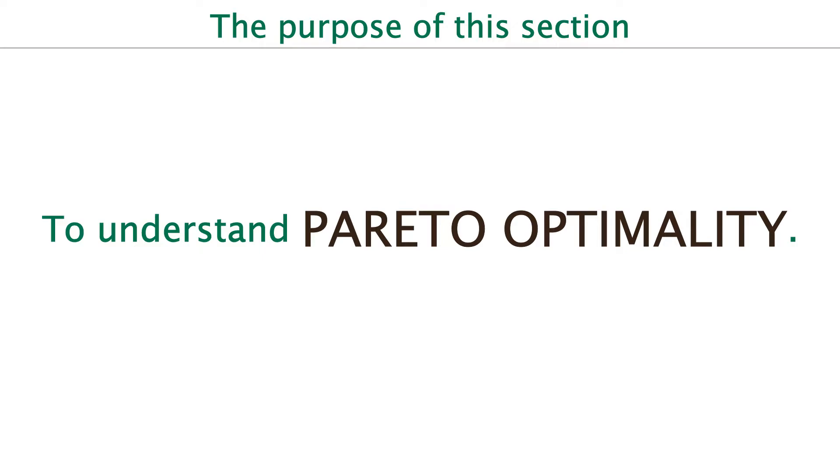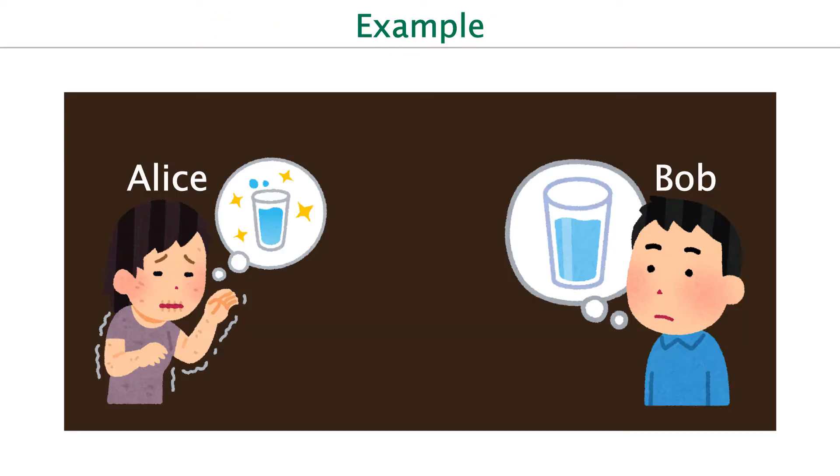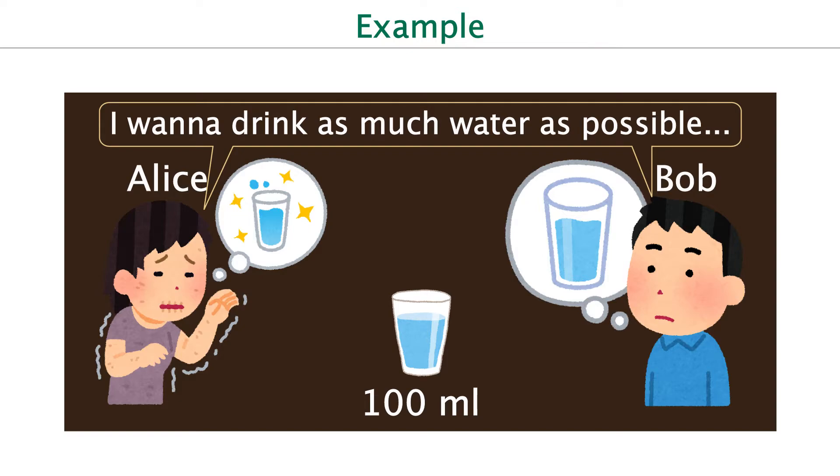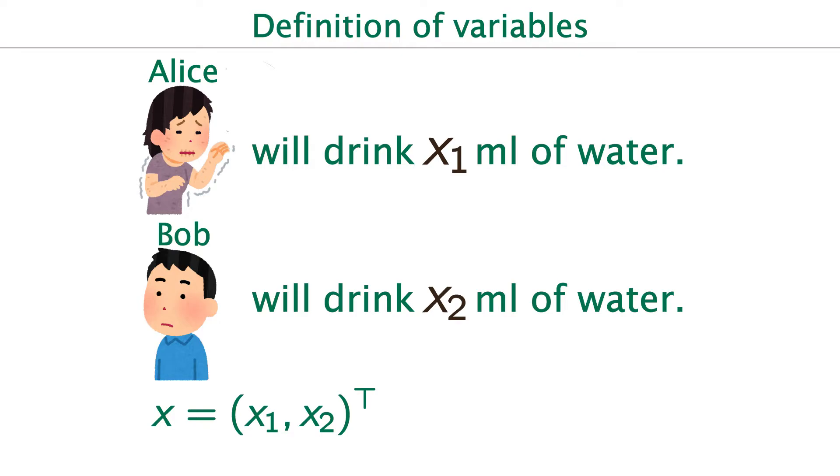Assume Alice and Bob in a closed room. They haven't been drinking water since yesterday, and they are very thirsty. Suddenly, they've found 100ml of water in the room. They both wanna drink as much water as possible. This situation can be considered as a multi-objective optimization in a sense. Now, suppose Alice will drink x1 ml of water, and Bob will drink x2 ml of water.